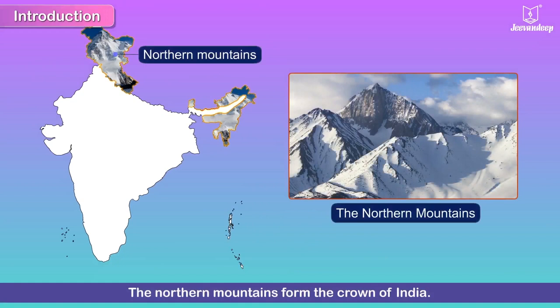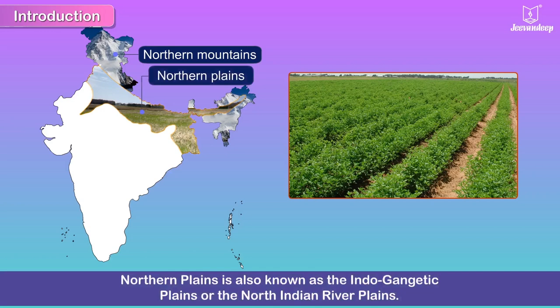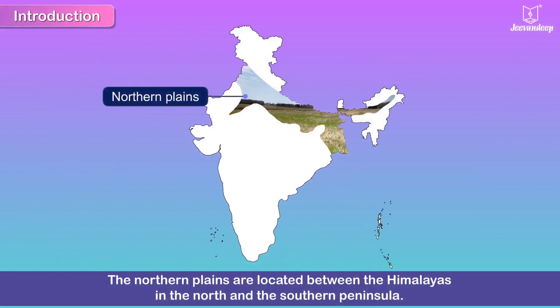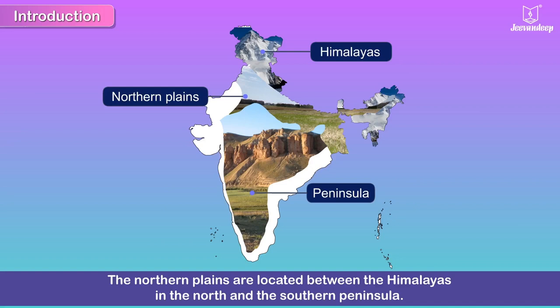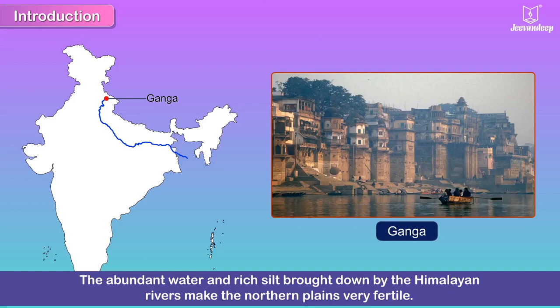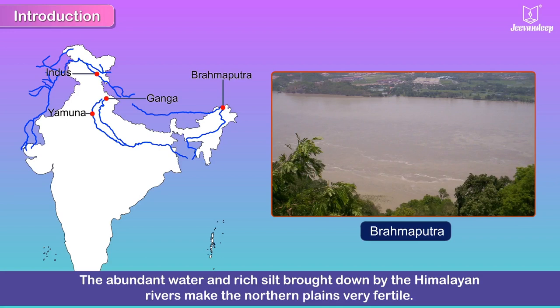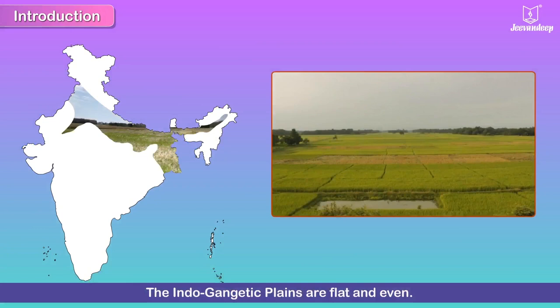We have seen how the northern mountains form the crown of India. As we come lower down the Himalayas, we find a vast and fertile land called the northern plains, also known as the Indo-Gangetic plains or the North Indian River plains. The northern plains are located between the Himalayas in the north and the southern peninsula. The abundant water and rich silt brought down by the Himalayan rivers — Ganga, Yamuna, Indus — make the northern plains very fertile.